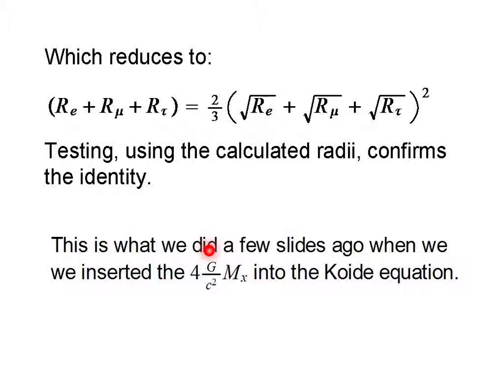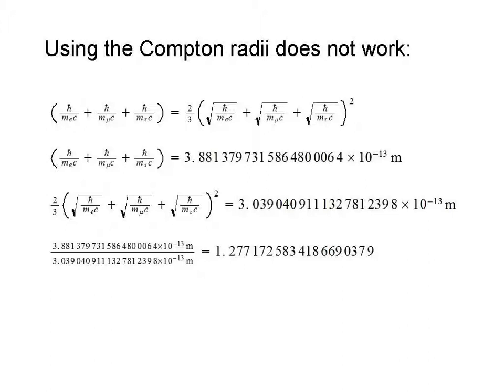Using the Compton radii in the Koide equation does not work. This is our Koide equation. We take the first half here, and we plug in our values, we plug in our mass values into these Planck relations. We get 3.88 times 10 to the minus 13th meters.